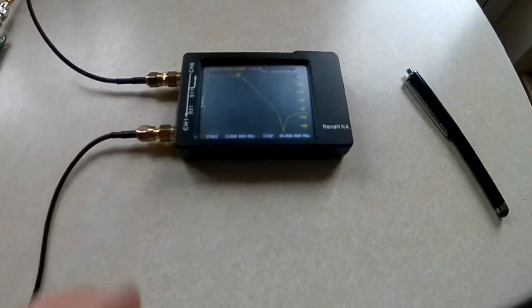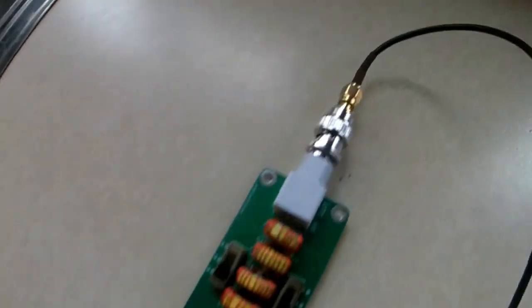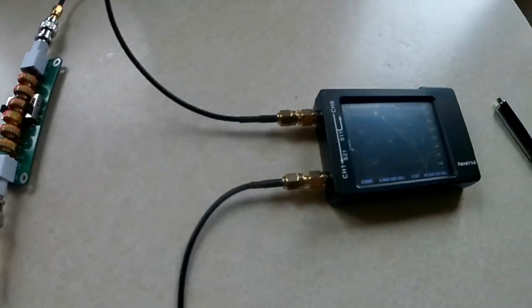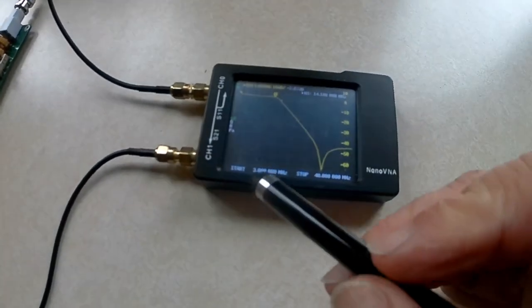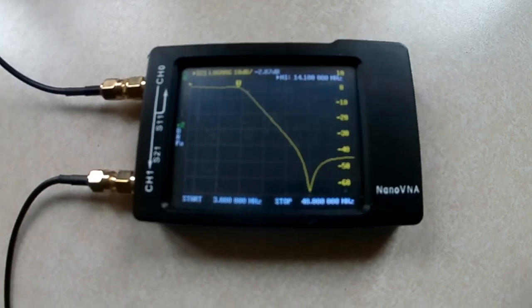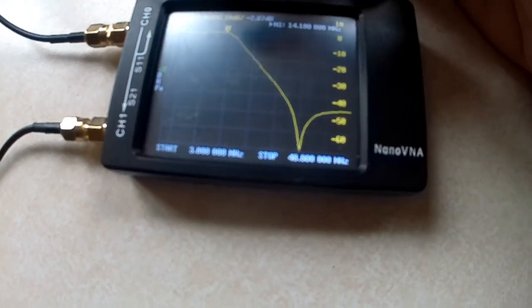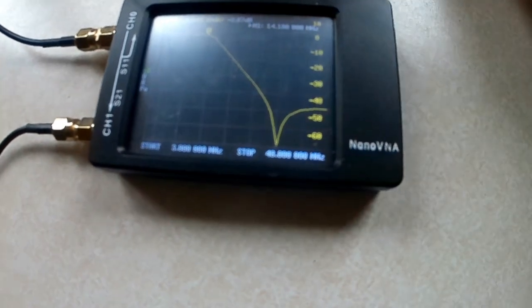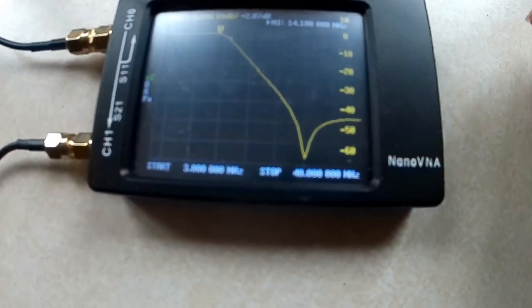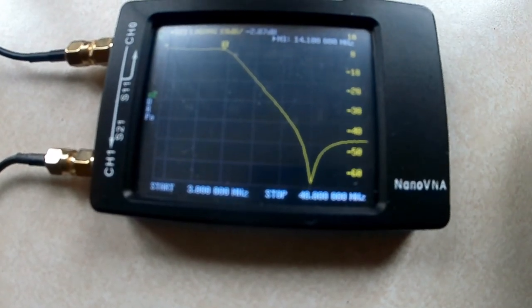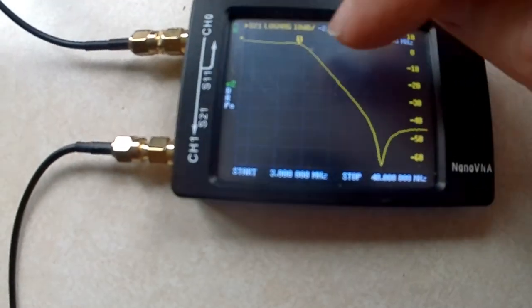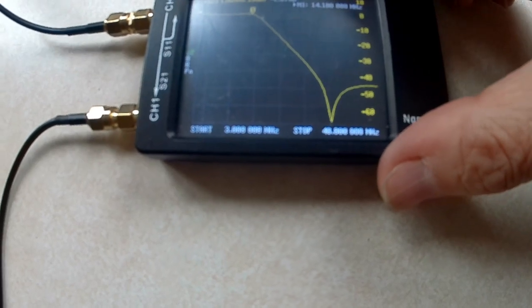Okay, I've got my nano VNA set up, just going in and out, set to the 20 meter band. It's scanning from 3 to 40 megs. Marker number one is 14.1 megahertz there, and it's minus 2.87 dB. You can see how steep it is.